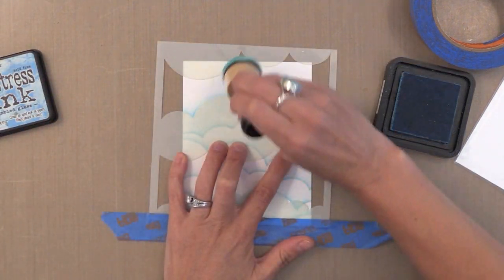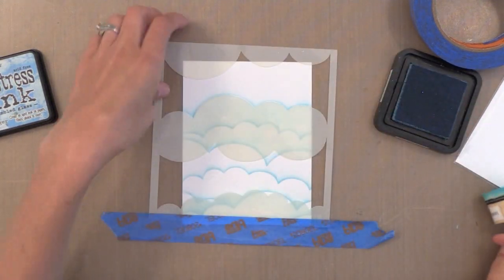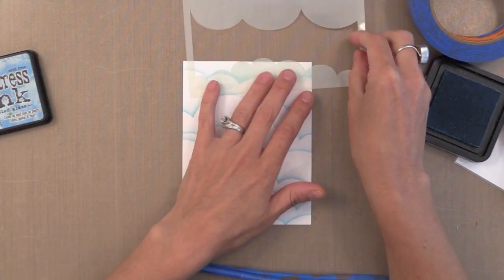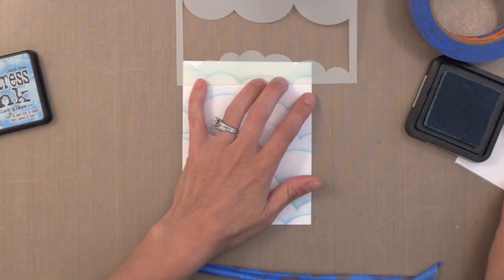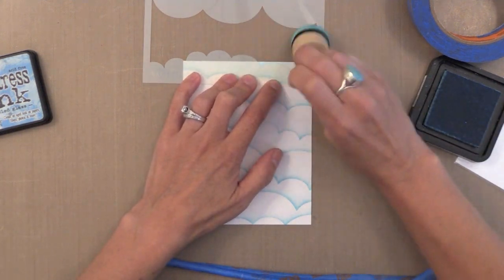I think I'll use this stencil a lot with lots of the cute little critter and people images that are out these days. Another thing you can do with this stencil is use it upside down and you can get waves too. So stencils aren't that much money so you can kind of invest in it and use it over and over again. It's a pretty good investment.